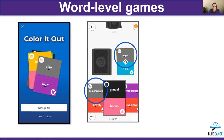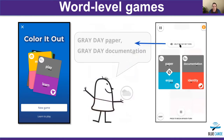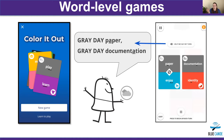Notice that learners don't have to know the pronunciation of these words in advance — they're simply matching visually that both words are Gray Day words. Once they drag the card up, they can play their turn. If they don't know what to say, they simply tap 'help me say my turn.' That turn sounds like this: Gray Day, paper — Gray Day, documentation. Notice how I'm using my hand to highlight the stressed syllable of paper and documentation. We recommend that teachers teach learners to do this because it creates not only an awareness of stress location, but also the amount of time on vowel that makes their pronunciation more successful.